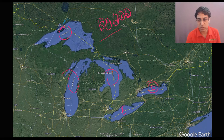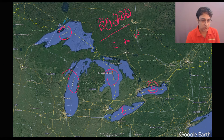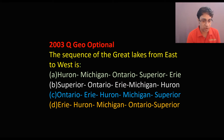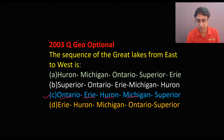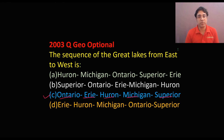With this you can either arrange these lakes from East to West or from West to East. So let us look at the question. The answer will be Ontario, Erie, Huron, Michigan, and Superior. And since it was asked by UPSC previously, it may be asked again also.